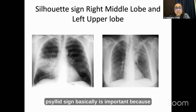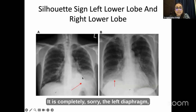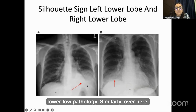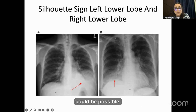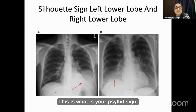The silhouette sign is important because it gives you anatomical cues. Look at the left diaphragm — if it is completely gone, this is a left lower lobe pathology. Similarly, an obscuration on the right diaphragmatic shadow indicates possible right lower lobe pathology. This is the silhouette sign.